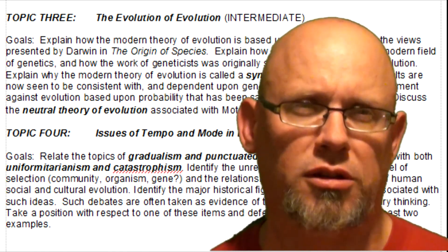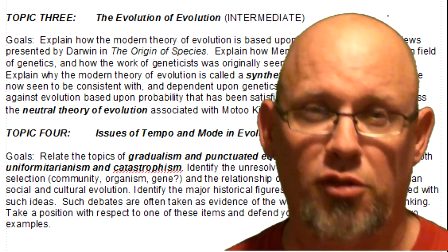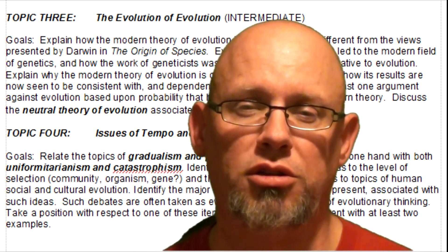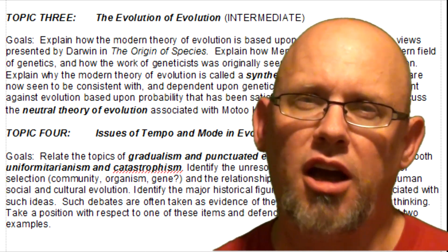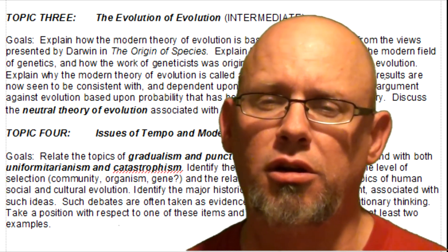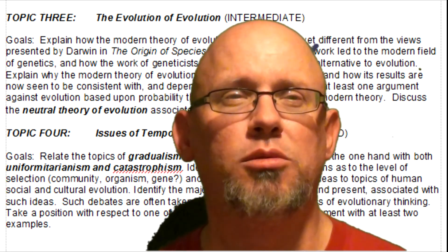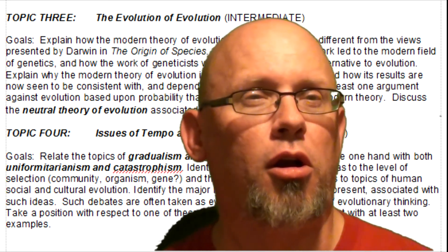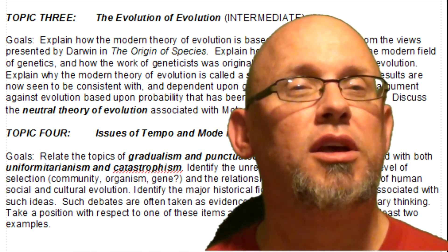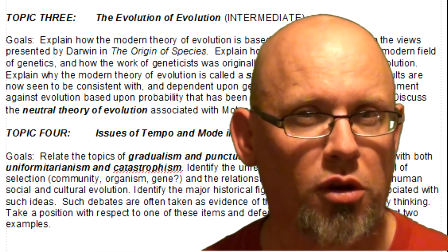Topic three is somewhat harder — it's called the evolution of evolution, and it's about how evolutionary theory has changed since the time of Charles Darwin. The most challenging topic, and the one that the most ambitious students should consider, is issues of tempo and mode in evolution. This has to do with honest disagreements within the field as to how evolution happens, what causes it, and how fast it happens.